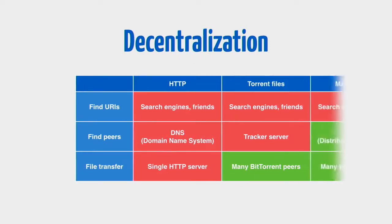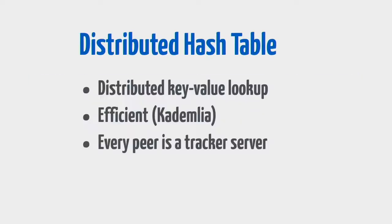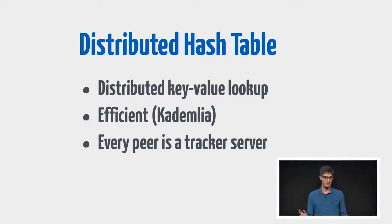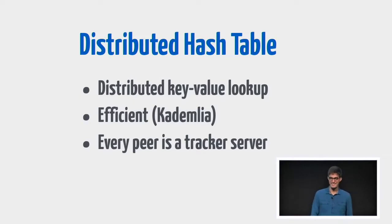We can do better — this is where magnet links come in. With magnet links, we use something called the distributed hash table to find peers, so we can actually eliminate the tracker server. With magnet links, we can go from just having the info hash — a 160-bit string — to having the full file without ever really talking to a server. DHTs are like one of the coolest ideas in computer science. When I first discovered what a DHT was, I was telling all my friends about it constantly. I even got off track explaining DHTs to an interviewer during a job interview.